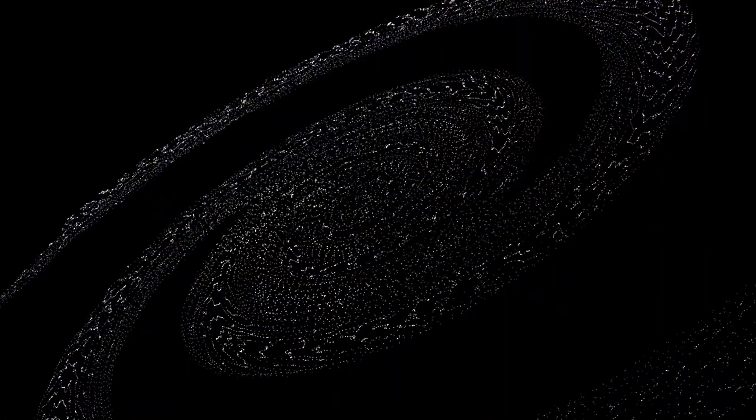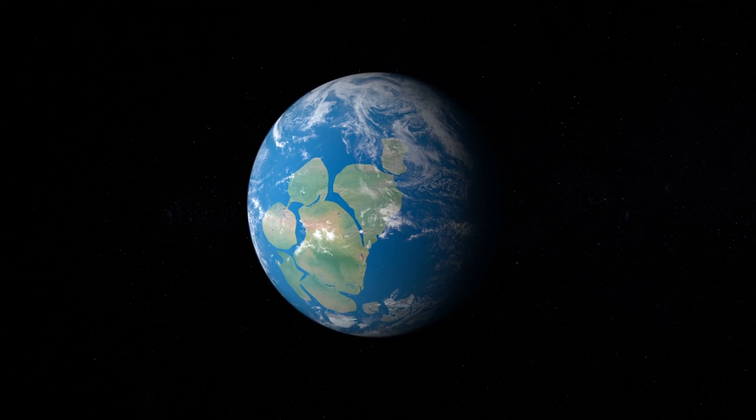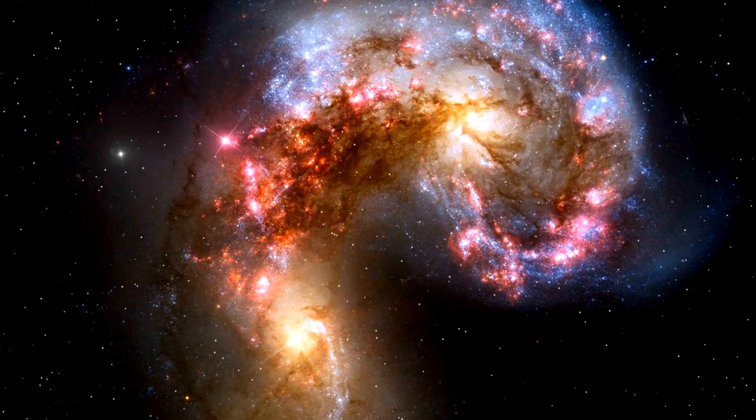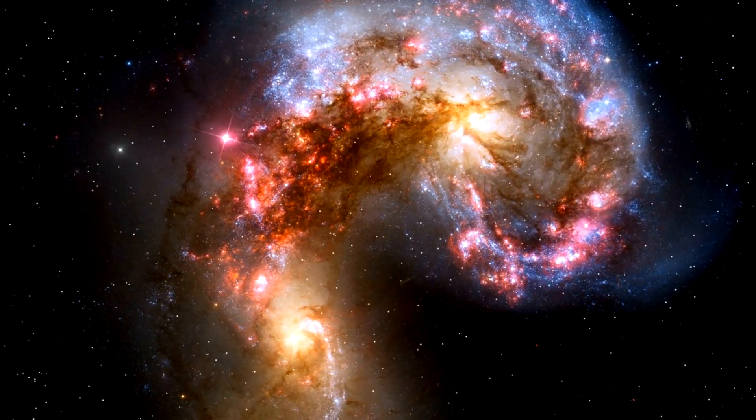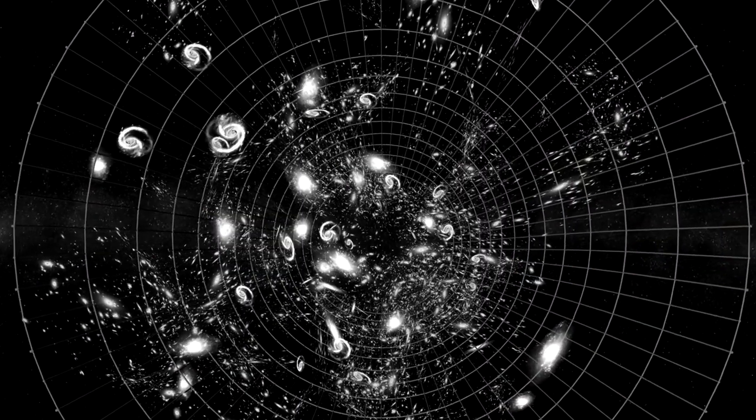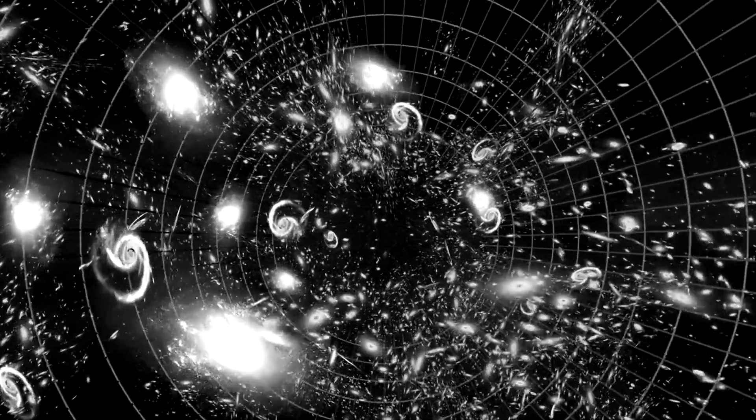But that's not all that has been discovered. The universe never ceases to amaze us with its colossal and dramatic events. One such event is the ABEL 3667 supercluster, a cosmic formation that holds a significant place in the annals of astronomy. ABEL 3667 is a massive supercluster located about 730 million light-years from Earth. This supercluster is composed of two galaxy clusters that collided, creating one of the most energetic phenomena observed in the universe since the Big Bang. The significance of ABEL 3667 lies in its sheer scale and the insights it provides into the dynamics of galaxy clusters.